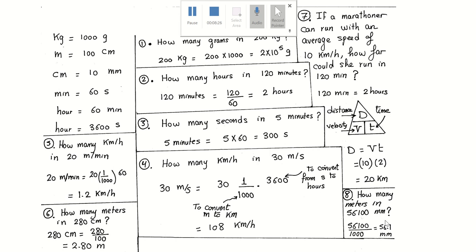Problem number eight: how many meters in 5600 millimeters? One meter equals 100 centimeters and one centimeter equals 10 millimeters, so one meter equals 1000 millimeters. To go from millimeters to meters, divide by 1000. So 5600 millimeters divided by 1000 equals 5.6 meters.